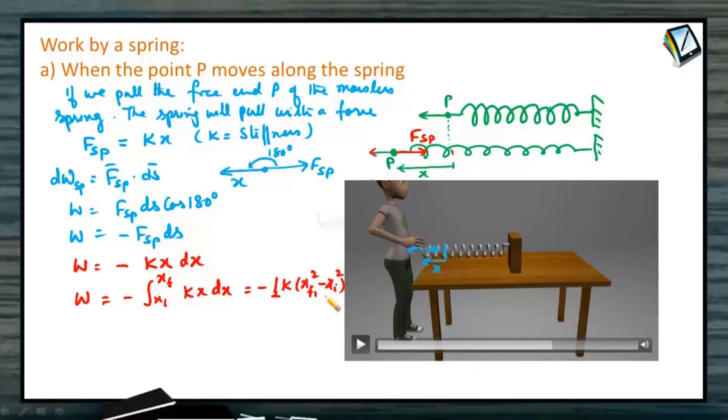This is the total work done in expanding this spring from a displacement x initial to x final. x initial and x final are the deformation. So we will note this point. If x final is greater than x initial, then work done on the spring will be negative. If x final is equal to x initial, again we come back to the same displacement, work done by the spring force is zero. x final is less than x initial, then work done by the spring force is positive. So a spring can perform positive, negative as well as zero work.